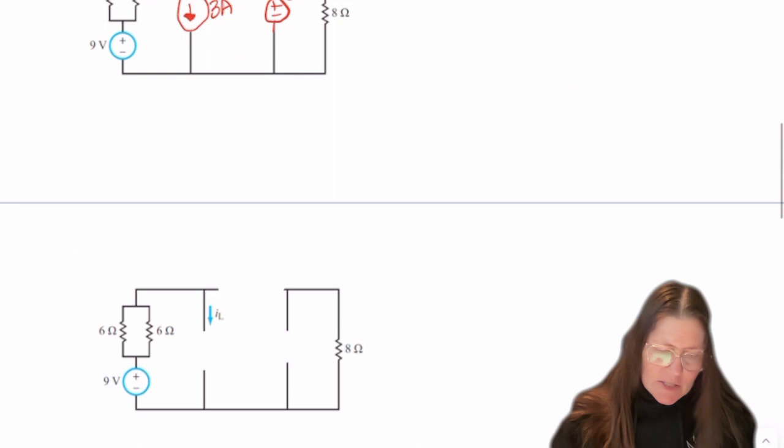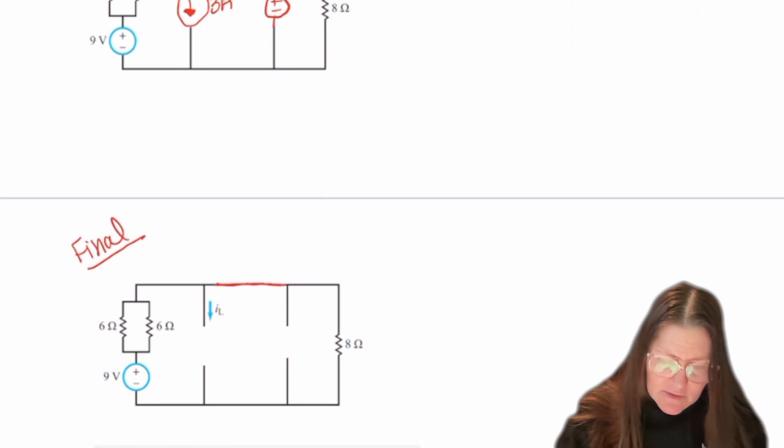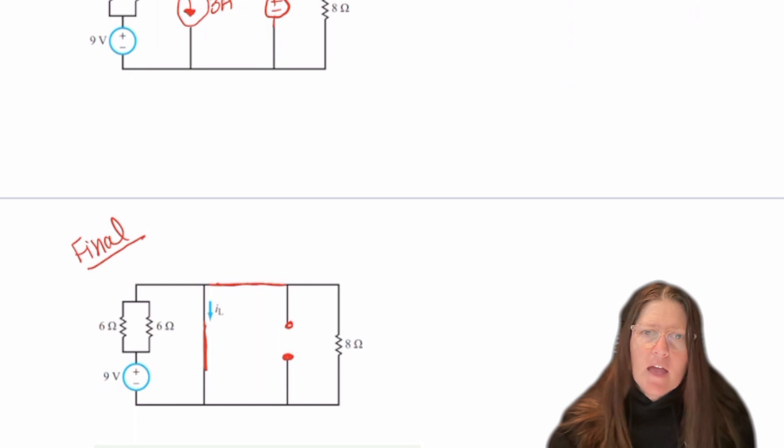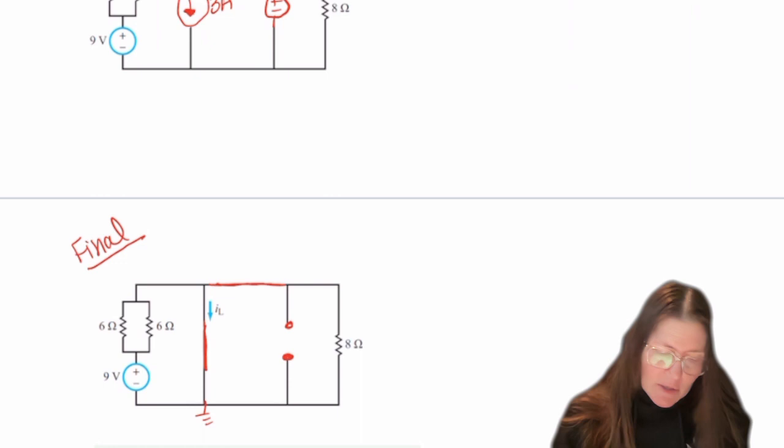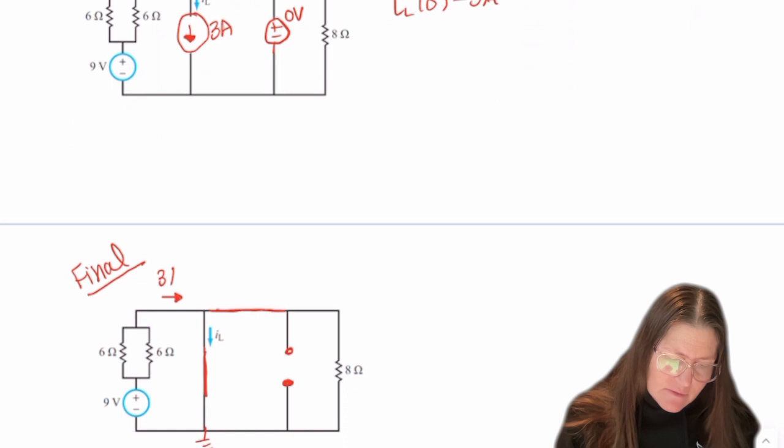So now I need to know the final. And in the final state, again, it's closed. This will be a wire and this will be an open. And with this as zero again, the current going through this branch will be the same that I found before of 3 amps.